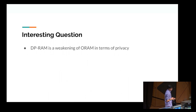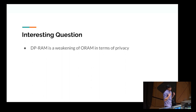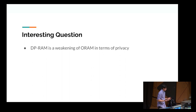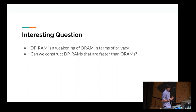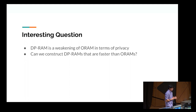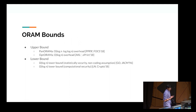This leads to a very interesting question: differentially private RAM is a weakening of ORAM in terms of privacy — it looks like actually a significant weakening. So can we construct differentially private RAMs that are faster than ORAMs? It's a very natural question. It seems like it should be doable. When I first thought about the problem, I was like, one access pattern hiding it — this should be easy.